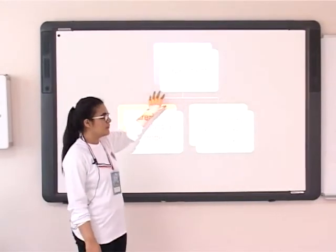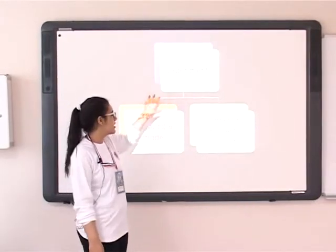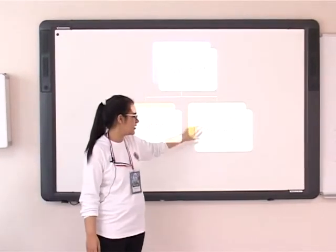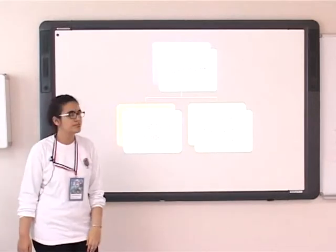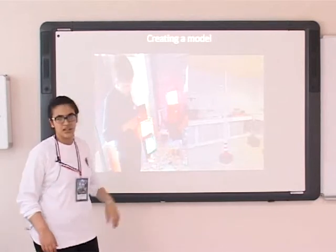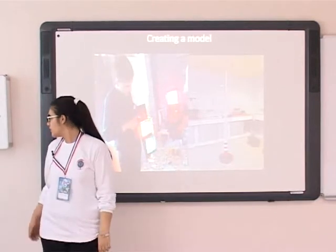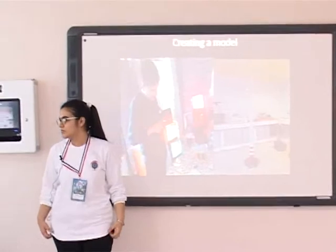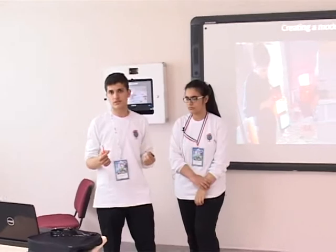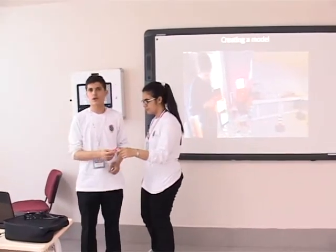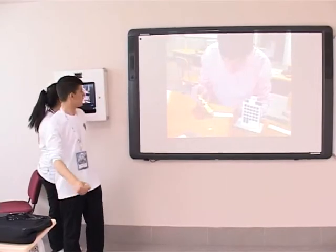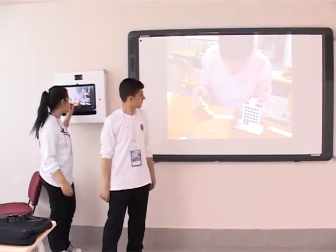The process of making this project was based on two types. The first was creating the model of the project, and the second was connecting the electric circuit. For the first part, we used the materials mentioned before. We used simple objects to make the model and help each other understand. These are some pictures of how we created the model of the project.